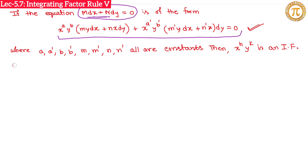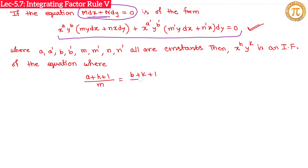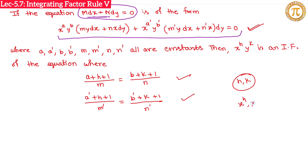Then x^h y^k is an integrating factor of the equation. The question is: what are h and k? These h and k satisfy two equations. The first equation is (a + h + 1)/m = (b + k + 1)/n, and the second equation is (a' + h + 1)/m' = (b' + k + 1)/n'. Solving these two equations gives you the values of h and k.